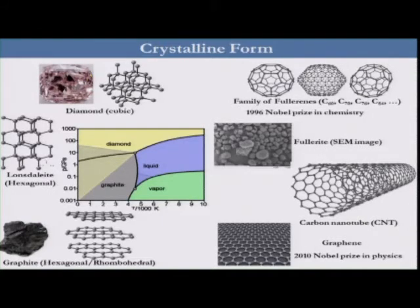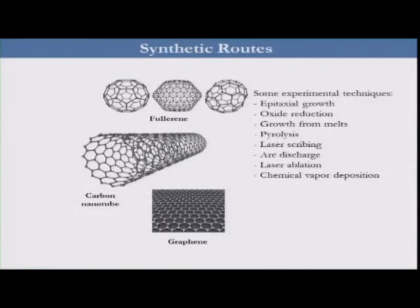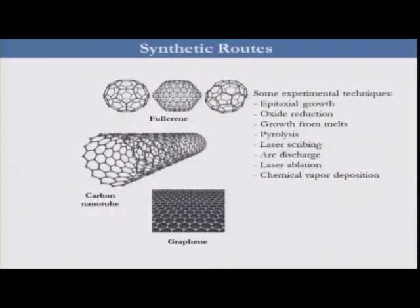Because of its importance, many researchers have been working on discovering new phases or new forms of carbon and extending its allotropy. In the last decades, we have seen the discovery of very interesting and unique phases, like the family of fullerenes, which was awarded the Nobel Prize in chemistry in 1996. Then came carbon nanotubes, and very recently, two physicists were awarded the Nobel Prize in physics for the discovery of graphene.